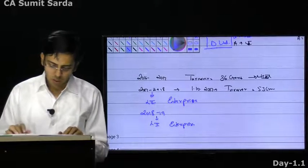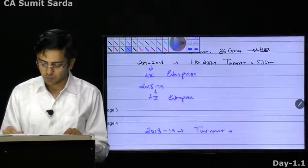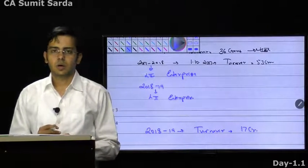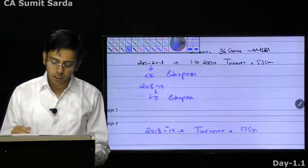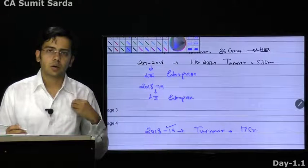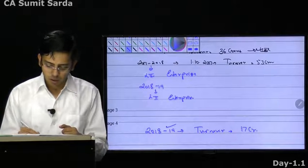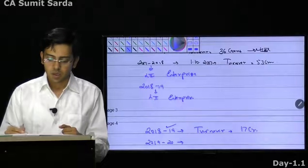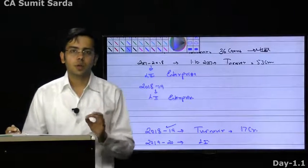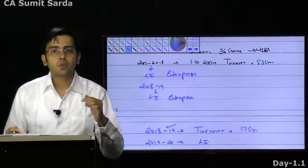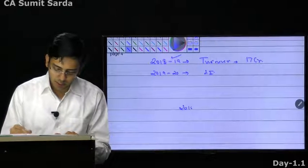How long will you remain a Level 1 enterprise? In 18-19, your turnover dropped to 17 crores. You see the last audited balance sheet — you were Level 1. So you continue to be Level 1 in 18-19. In 19-20, you still need to be Level 1. Whenever you qualify for a particular level — either Level 1 or Level 2 — you need to continue that for at least one more year, even if you cease to be such enterprise.